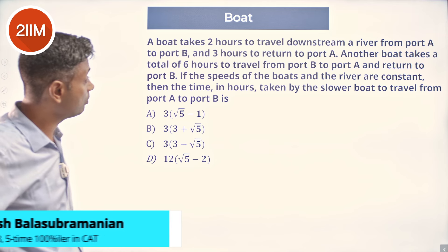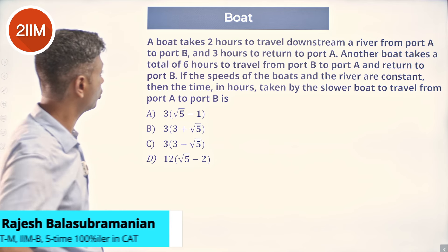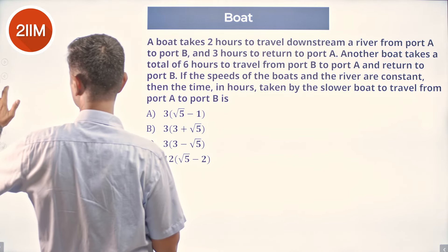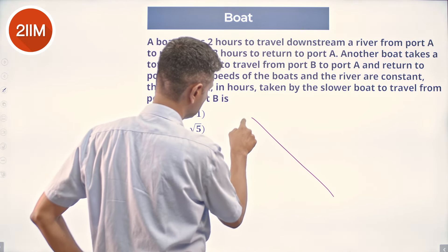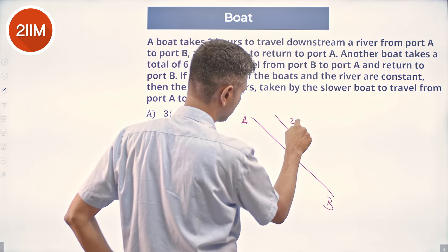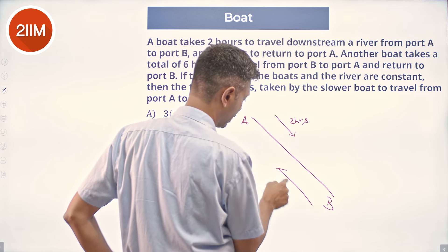A boat takes two hours to travel downstream a river from port A to port B and three hours to return to port A. So, A to B, this is downstream, this is two hours, coming up is three hours.